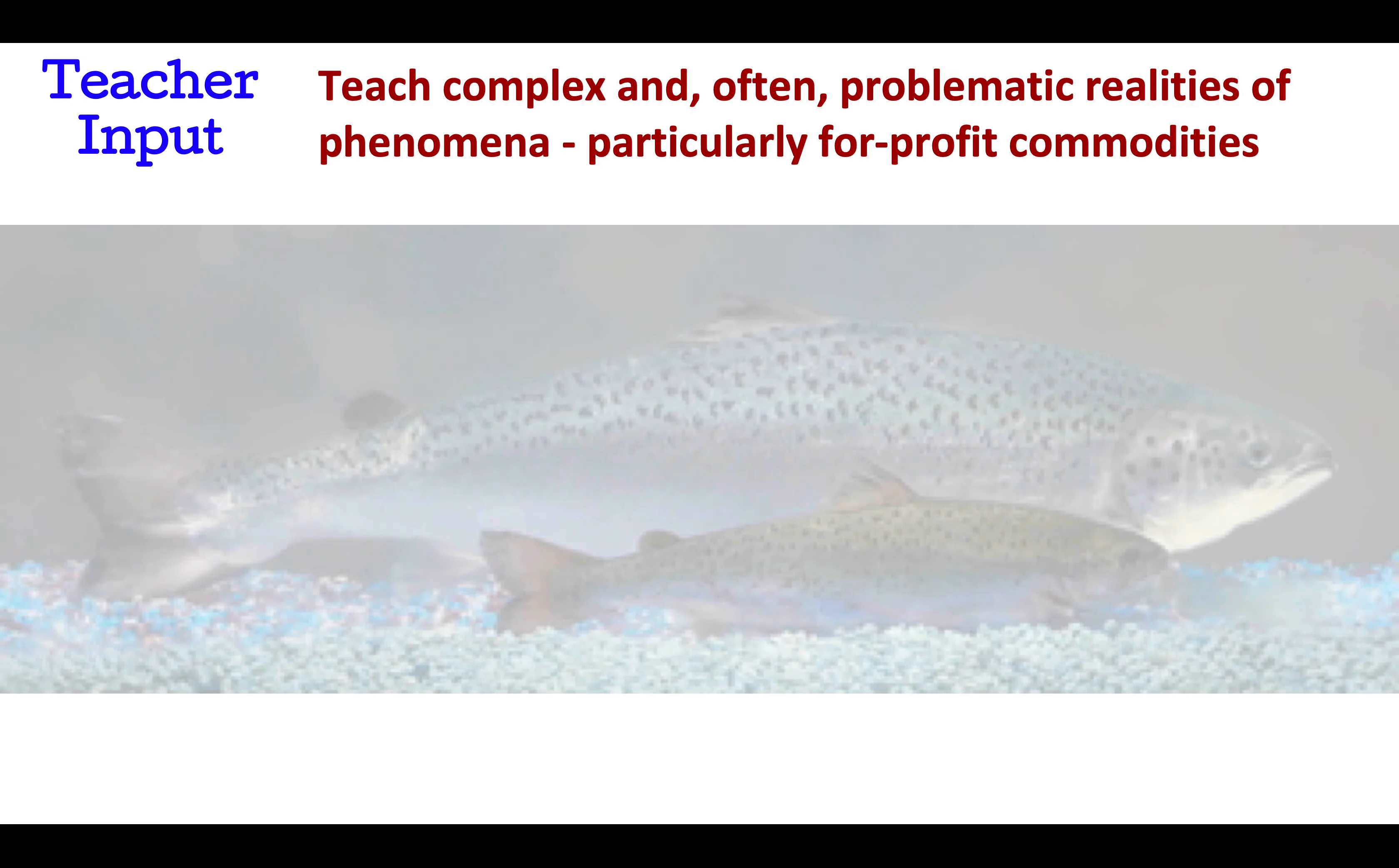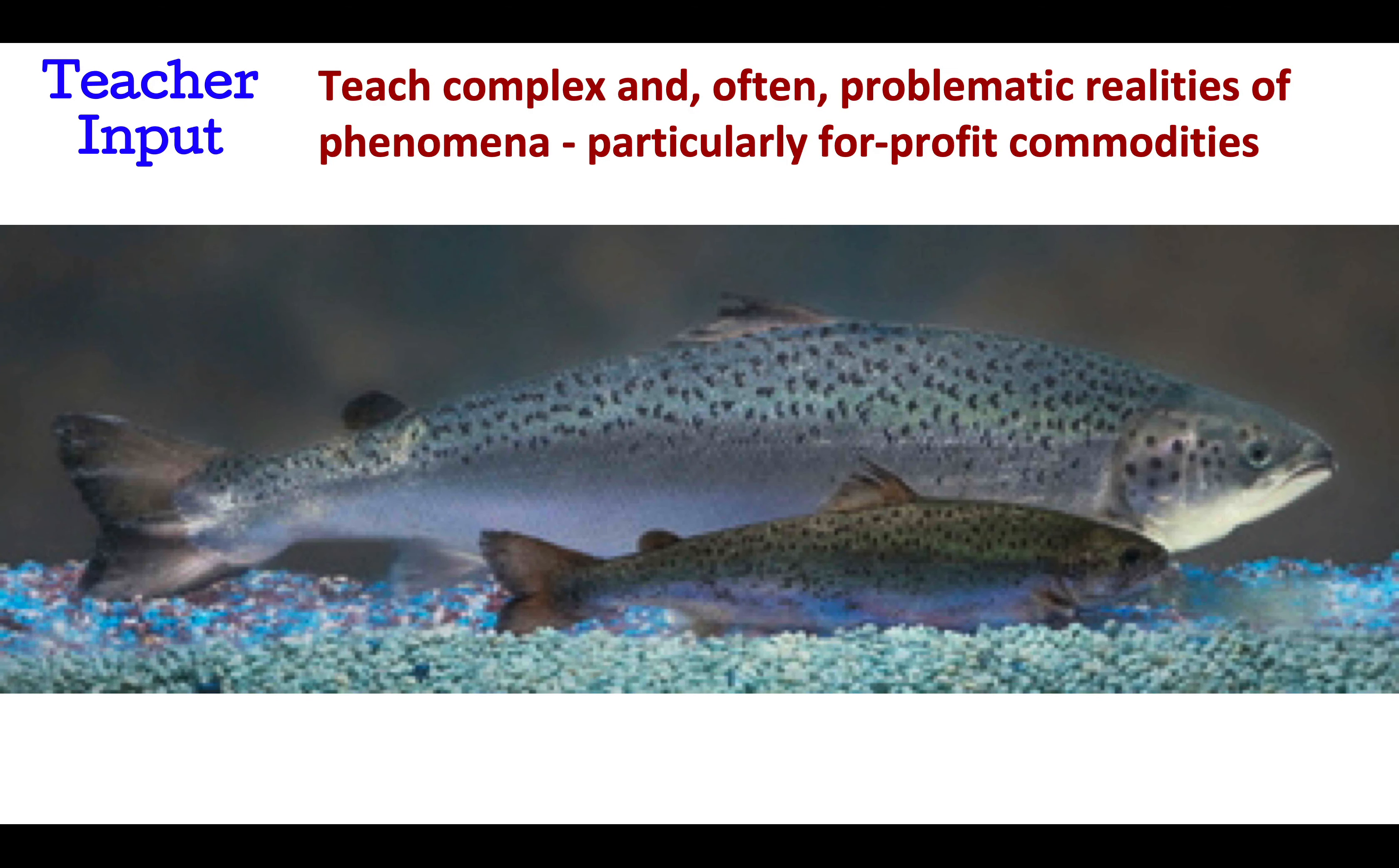For teacher input, a particularly important thing to directly teach students is that things, such as for-profit commodities, are generally not as simple and unproblematic as they might seem. For example, when people see genetically modified salmon, they may conclude that science and technology have provided much more abundant and better food than does nature.